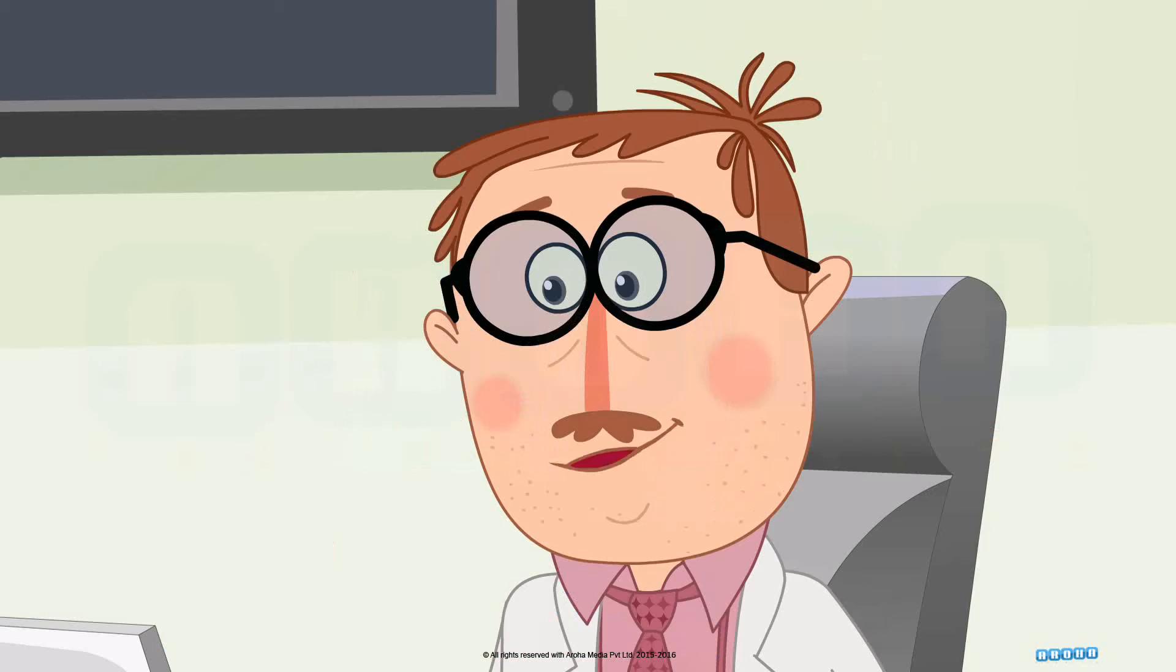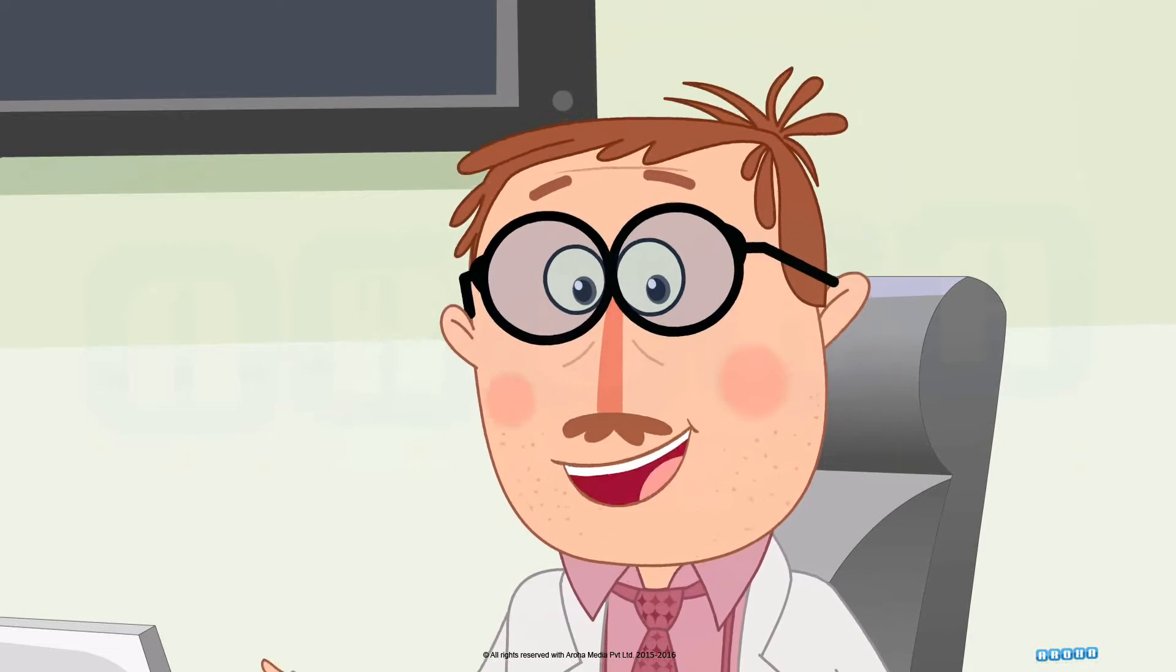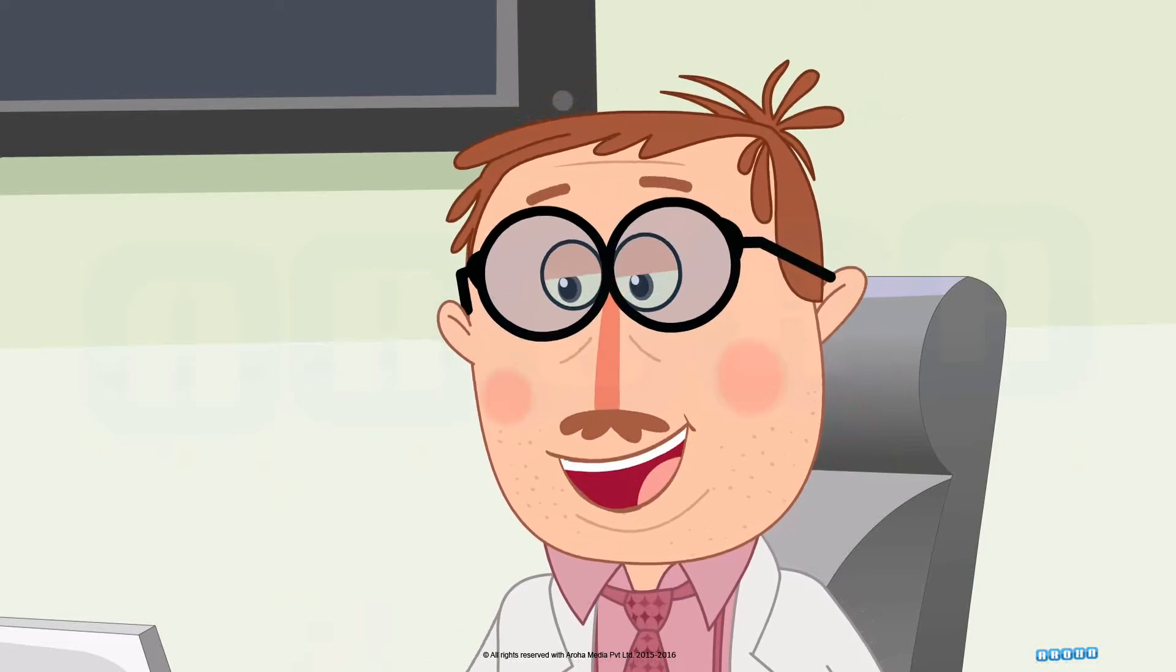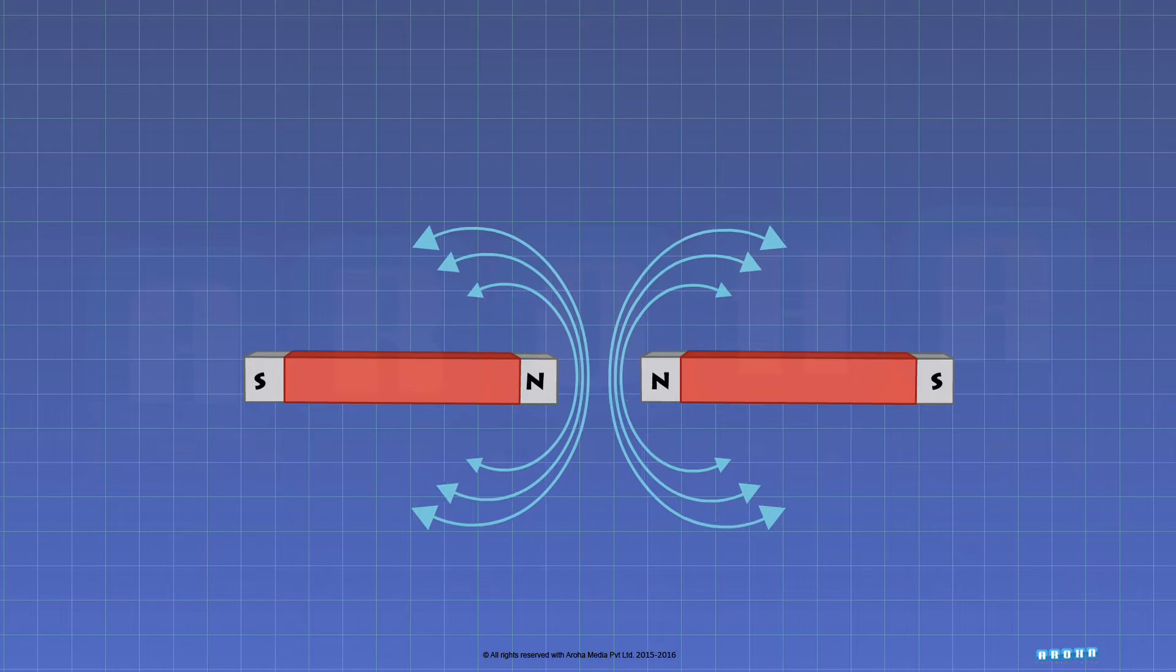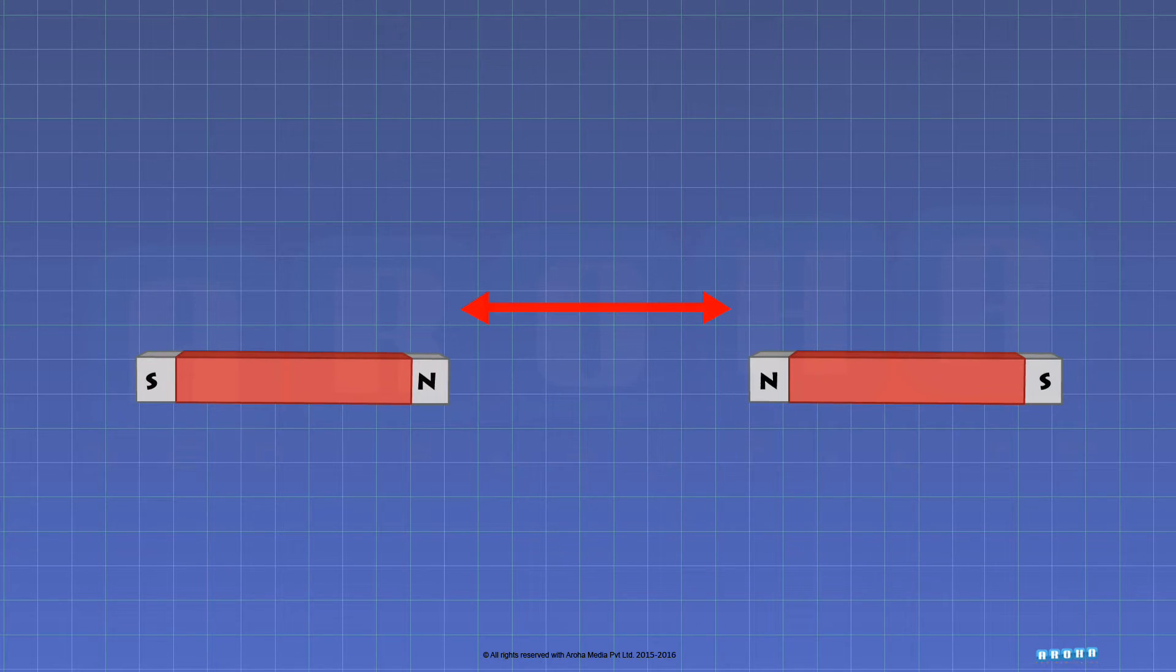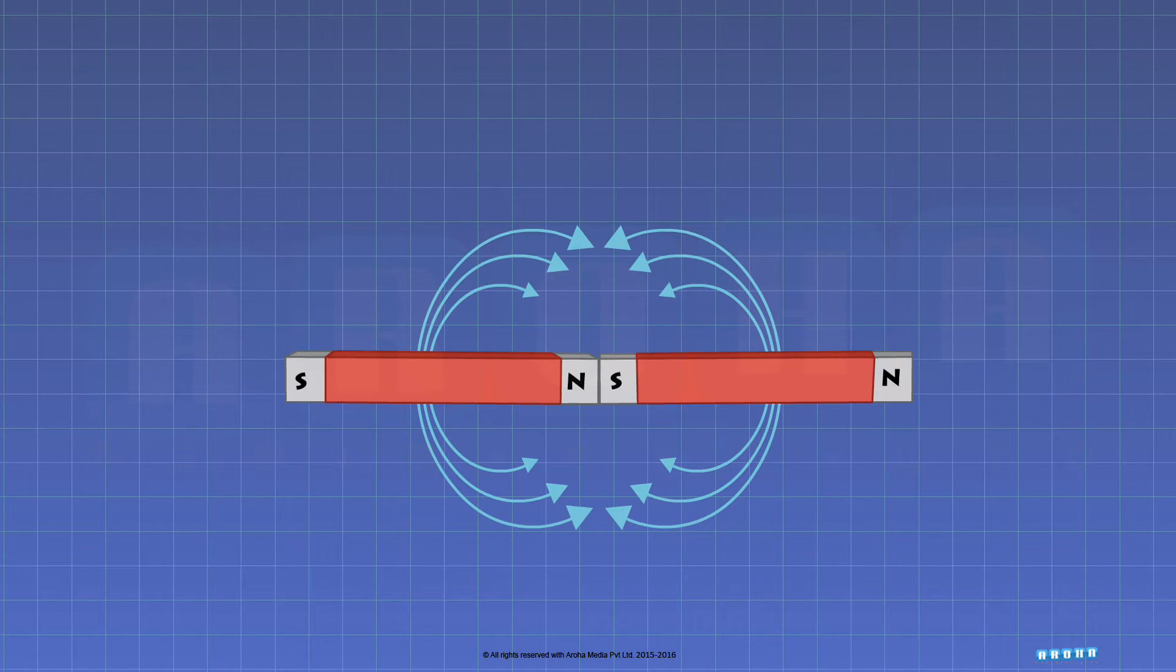What do they repel? One magnet repels the same pole of another magnet. So, if you bring two North Poles of two magnets close together, you will be able to feel the repulsion. They push each other away. And if you bring the opposite poles of two magnets, like the North Pole of one and the South Pole of the other, you will notice that they attract each other and quickly stick together.